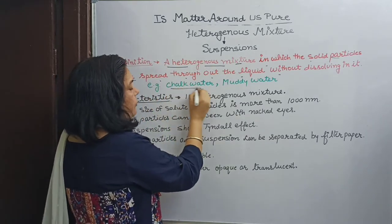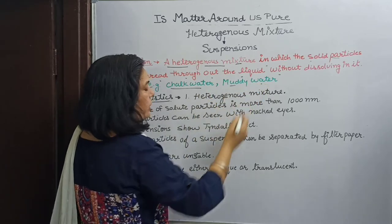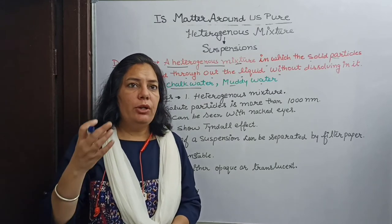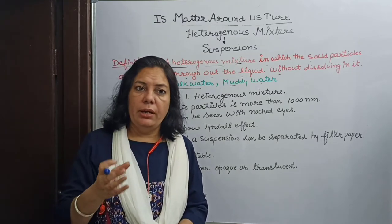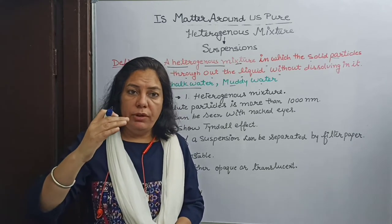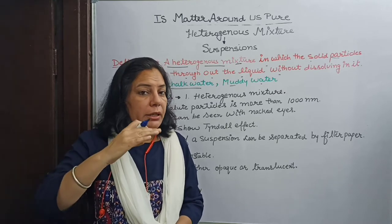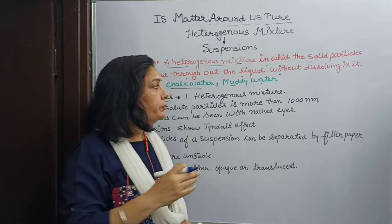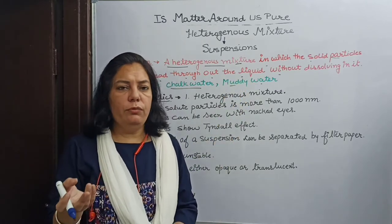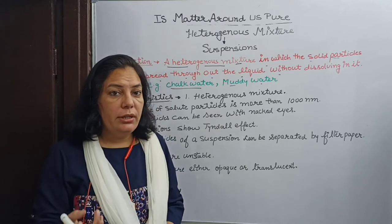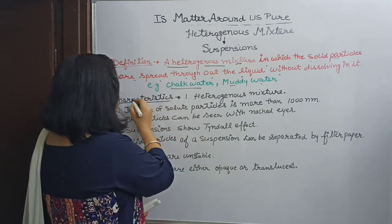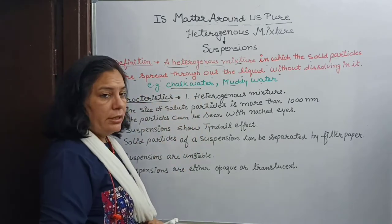Examples of such mixtures are chalk water and muddy water. If we mix chalk powder in water we get a suspension, because when we leave the mixture undisturbed for some time, the heavy particles settle down and we get transparent water on top. Similarly, when we mix mud or soil in water, we get a suspension.